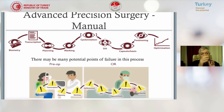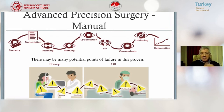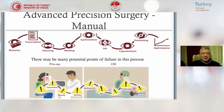What we need is advanced precision surgery — manual applications are not feasible for this nowadays. You have to do biometry, transcription, planning, marking, and account for cyclotorsion and surgically induced astigmatism. You have to create a very well-centered capsulorrhexis with good overlap and correctly position the IOL, then optimize the outcome. These are all potential points of failure in manual surgery. There are so many unknowns, and you must be very precise.